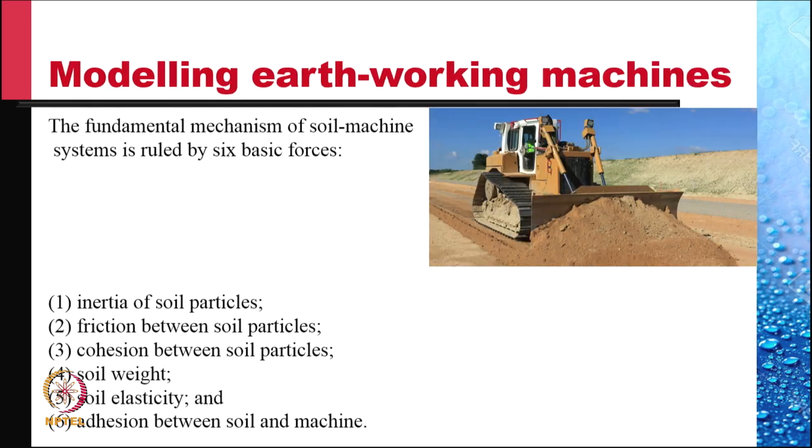Each of these special cases allow more scaling freedom than is allowed by the phenomenon in its entirety. Let's do in detail an example of modeling of earth-working machines. The soil-machine interaction system is ruled by six basic forces: first, the inertia of soil particles; second, friction between soil particles; third, cohesive force between soil particles; fourth, the weight of the soil.